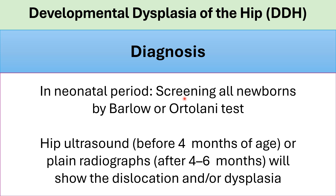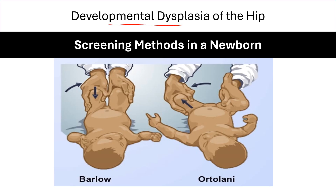Diagnosis of DDH in the neonatal period: it's very important to do screening from birth and at each subsequent well visit using Barlow and Ortolani maneuvers, whether or not there are risk factors. It is mandatory for all pediatricians to perform Barlow and Ortolani for all newborns. If you suspect DDH, order a hip ultrasound if the age is less than 4 months. From 4 to 6 months, and ideally from 6 months, plain radiographs will also make the diagnosis.